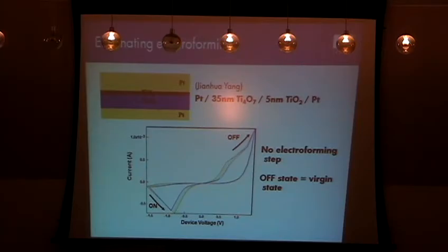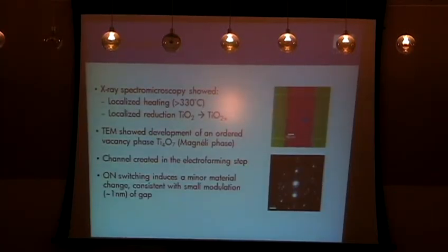Now one last thing I want to show is, if we're seeing that the electroforming step is just creating this sub-oxide channel, you can avoid the electroforming step by just growing a layer of that deliberately engineered from the beginning. And this is exactly what my colleague Jim Lau did. He grew a very thick sub-oxide layer from a Ti4O7 target, and then a very thin high oxide from a rutile target. And here's the beautiful data that he got: no electroforming step. The off-state is identical to the virgin state, and it just goes right into this on-off switching.